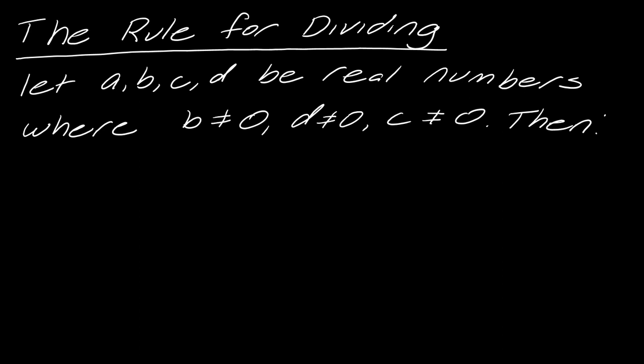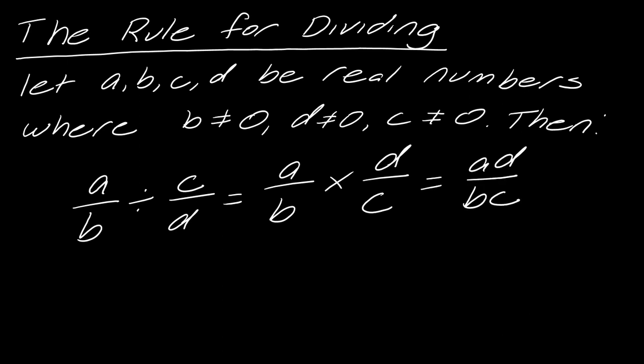So I'm going to use the letters A, B, C, and D to show you the rule. So let's say that I've got A over B divided by C over D. Well here's what the rule says to do. You've got A over B times, so watch this, D over C, and then this is going to equal AD over BC.